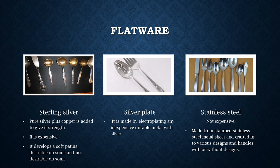The next material is stainless steel, which is not at all expensive compared to silver. We commonly use stainless steel, and as Muslims we generally do not use dinnerware or flatware made of silver or gold — though that information was shared just for knowledge. Stainless steel flatware is made from stamped stainless steel metal sheets crafted into various designs and handles, with or without decorative designs.